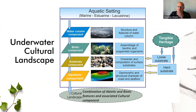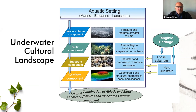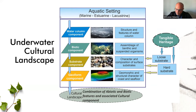For example, a submerged wreck or submerged architectural structures clearly influence the seafloor morphology by shaping it, but also influence the seafloor composition. In this sense, we can say that the underwater cultural heritage can be defined as the combination of abiotic features and associated cultural components.